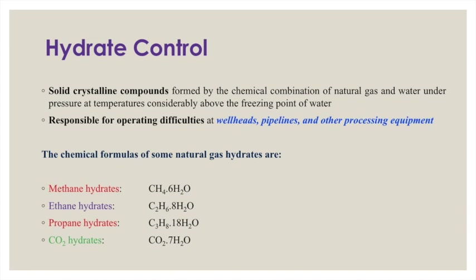The next problem frequently encountered in gas wells is gas hydrates. Since gas always carries some water along with it, we cannot remove 100 percent of the water, but we can minimize it. Hydrates are sometimes unavoidable and measures must be taken to control this phenomenon. Gas hydrates are solid crystalline compounds formed by the chemical combination of natural gas and water under specific pressure and temperature conditions, at temperatures considerably above the freezing point of water. These are highly undesirable in pipelines and are responsible for operating difficulties in wellheads, pipelines, and processing facilities.